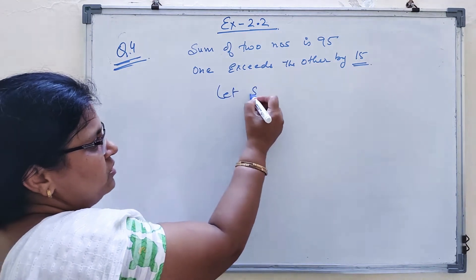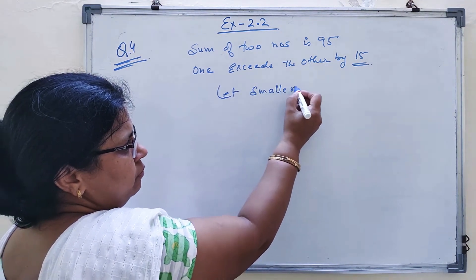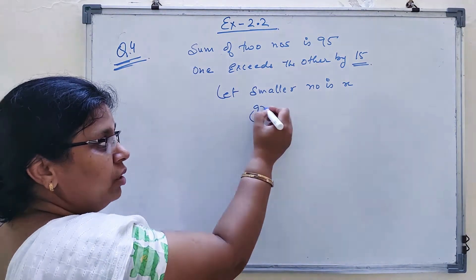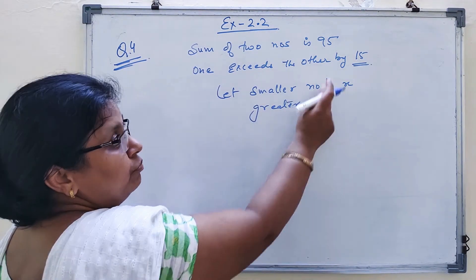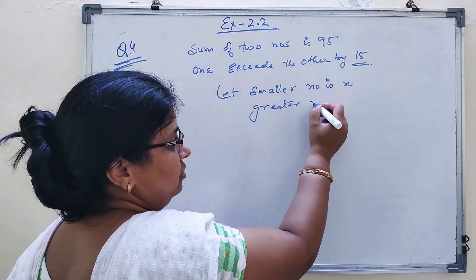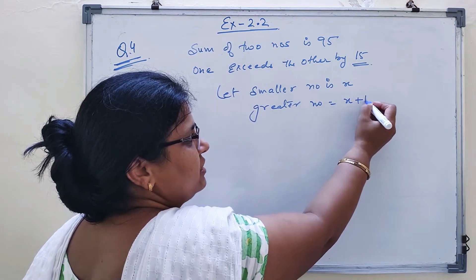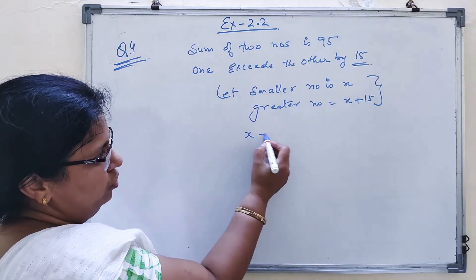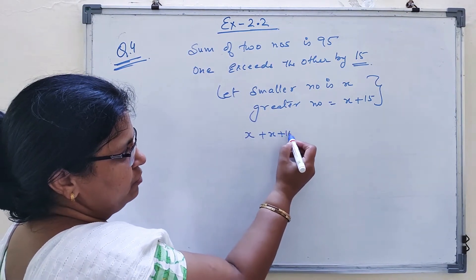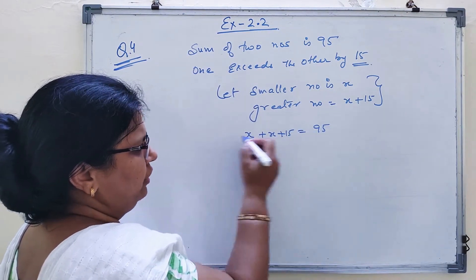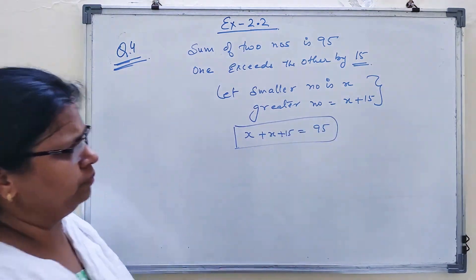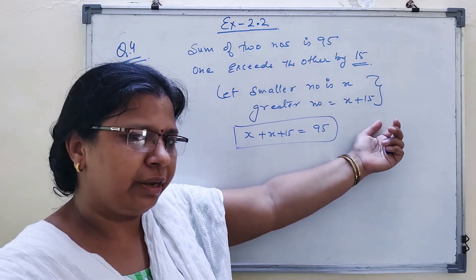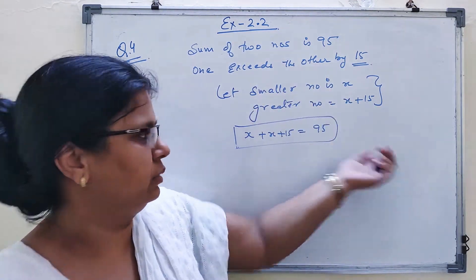So let the smaller number be x. The greater number will be x plus 15. And the sum of these two is 95. So you'll have x plus x plus 15 equal to 95.